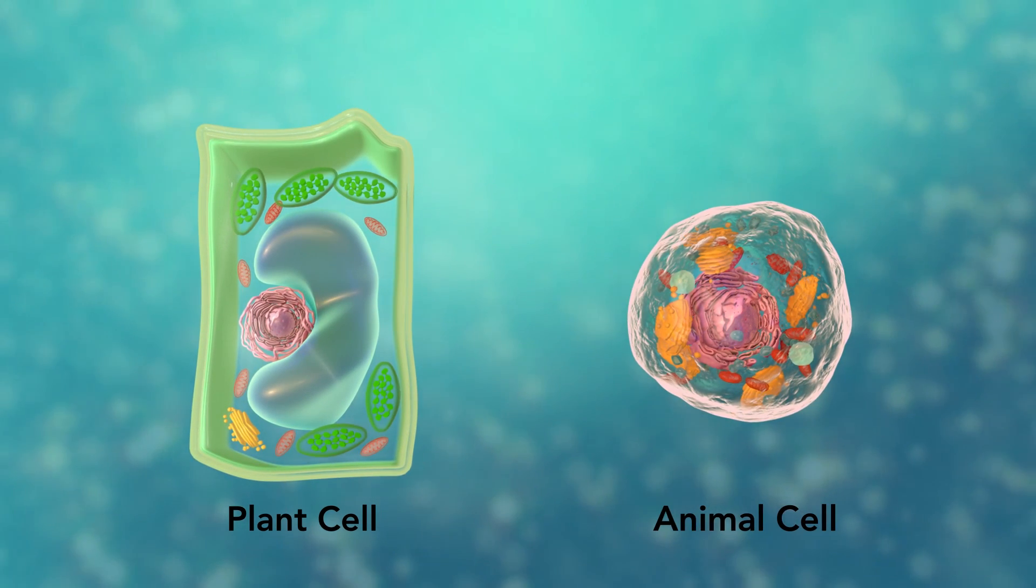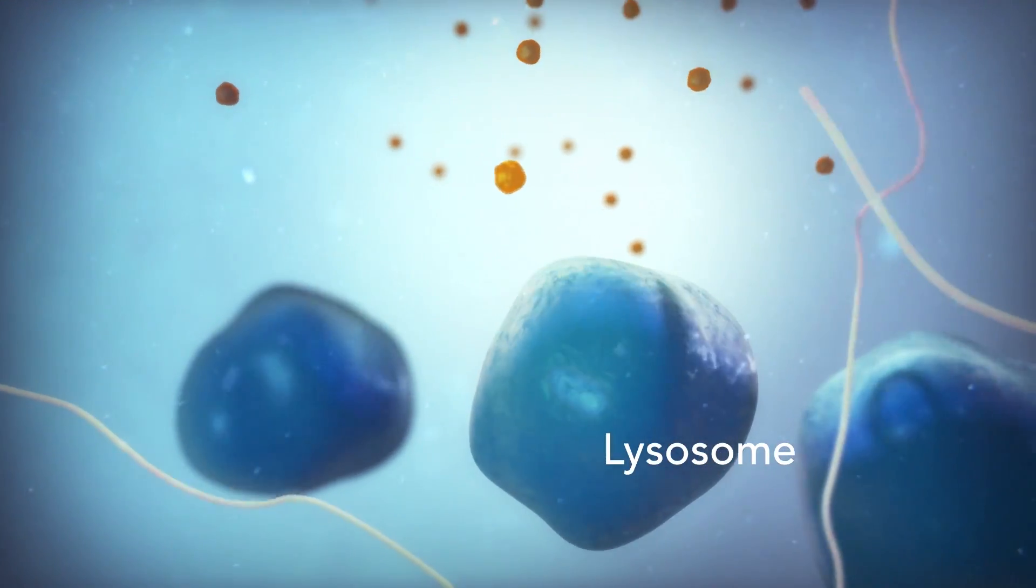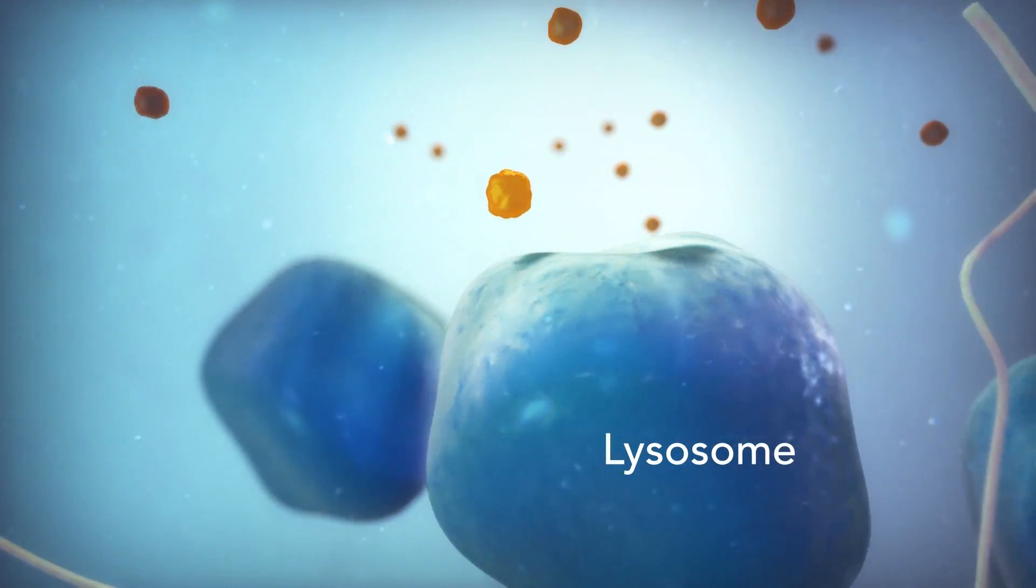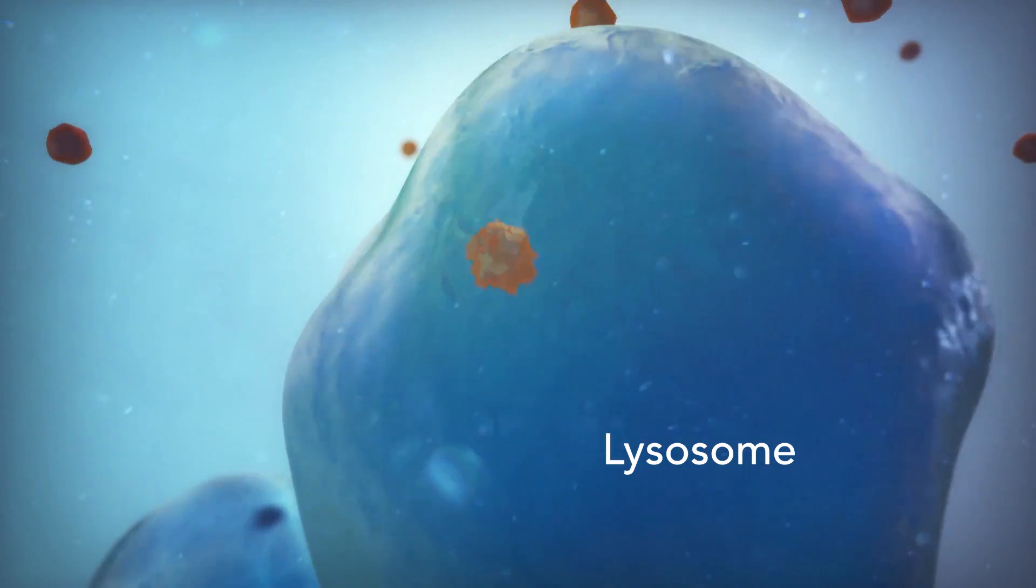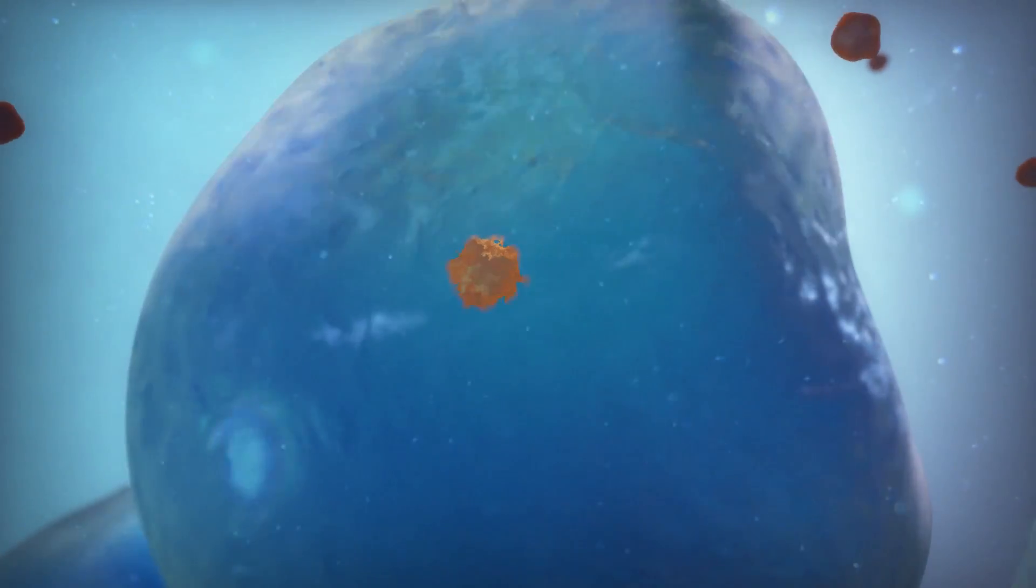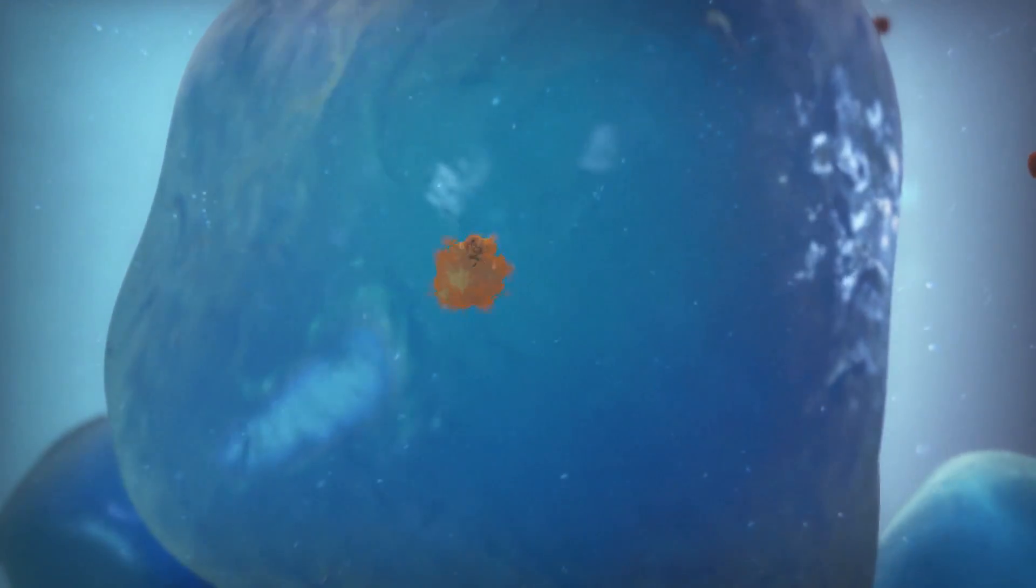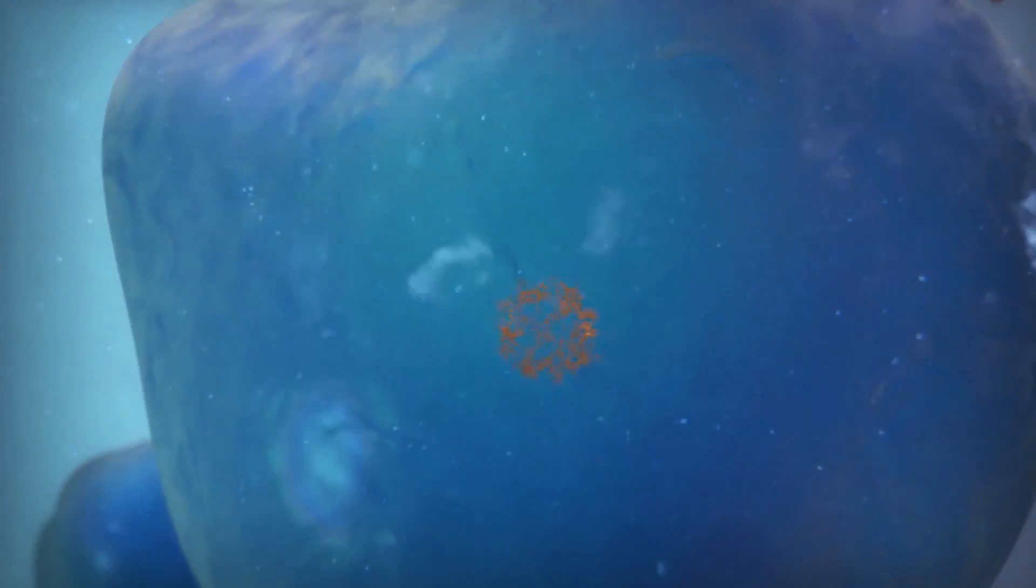Going back to the animal cell, you will see an organelle called a lysosome. Lysosomes are the garbage collectors that take in damaged or worn-out cell parts. They are filled with enzymes that break down this cellular debris.